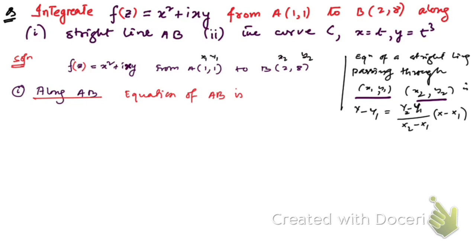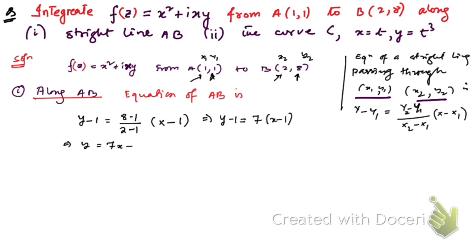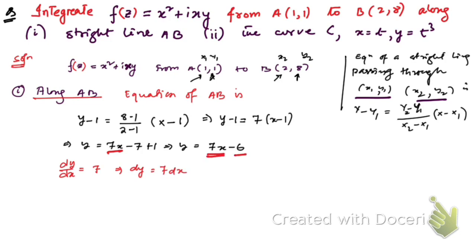Substituting: y − 1 = [(8−1)/(2−1)] × (x − 1), which simplifies to y − 1 = 7(x − 1), giving y = 7x − 6. Differentiating this, dy = 7 dx.